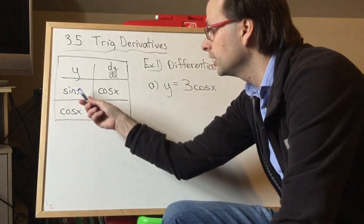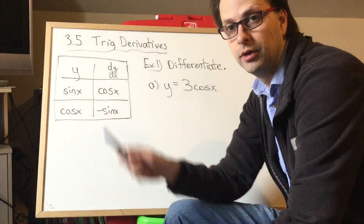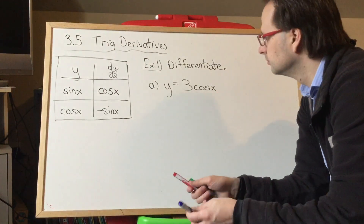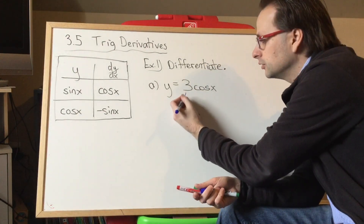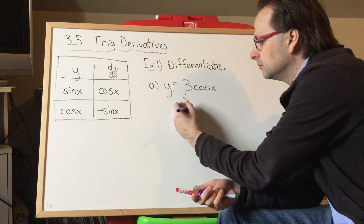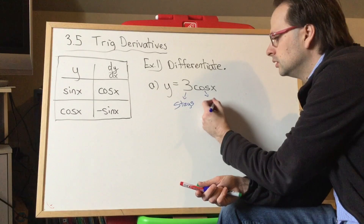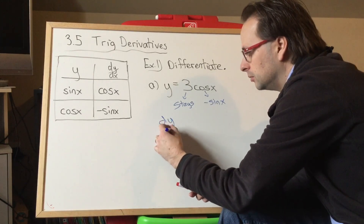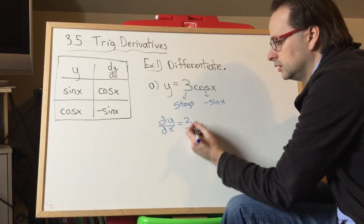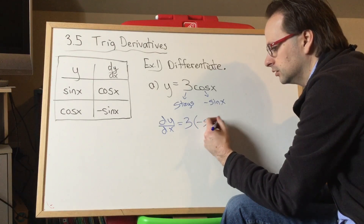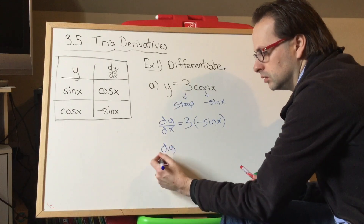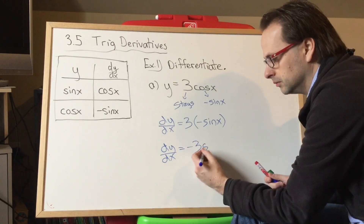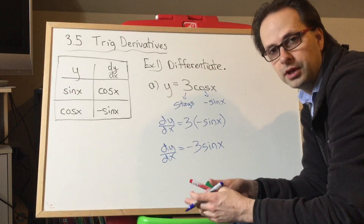So here are our rules: sine x differentiates to cos x, cos x differentiates to negative sin x. Let's put them to use. We're going to differentiate 3 cos x. Remember, 3 is a coefficient here, a constant term, so it stays. What does cos x turn into? Negative sine x. So the derivative is going to be 3 times the derivative of cosine, which is negative sine x. Or a lot of people will want to just write negative 3 sine x right away — the more comfortable you get, the more steps you want to skip.